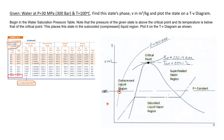Our temperature is 100 degrees C, which is below 374 degrees C, so I draw it down below the critical point. Where the 300 bar pressure line crosses the 100 degrees C temperature line, that is where this state lies. Drawing the diagram tells us this phase is a subcooled liquid.